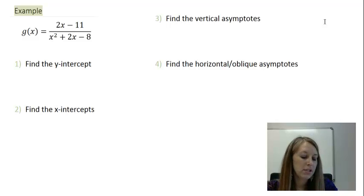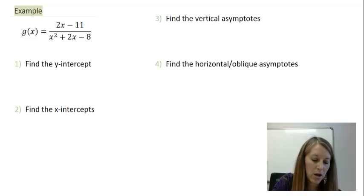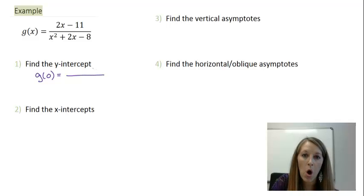The first step is to find the y-intercept, and we do that by plugging 0 into the equation, meaning I need to come up with g of 0. Remember, the trick to this is all of my variables are going to cancel out, leaving me with the constant terms. In the numerator, my constant term is negative 11. In the denominator, my constant term is negative 8.